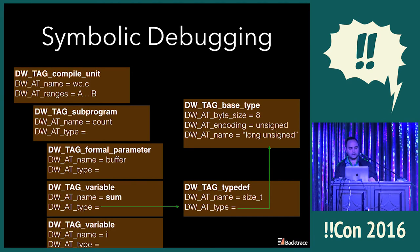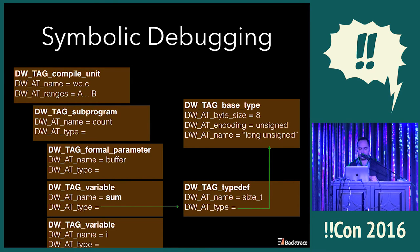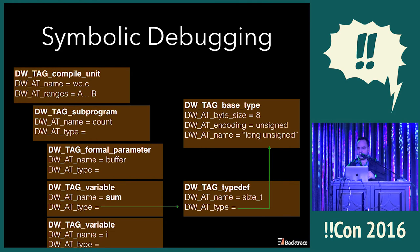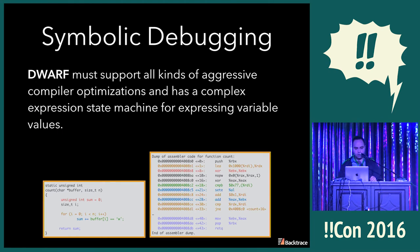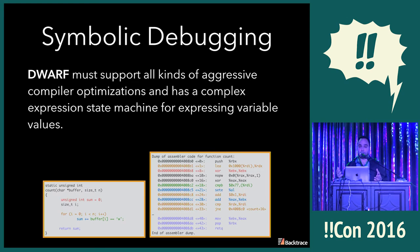For our toy program, a subset of that debug_info would look like this: you have a compilation unit, wc.c, with a whole bunch of information. Within that you have a subprogram or function, count, which has an argument buffer and a variable sum. The type of the sum variable is a size_t typedef, which is implemented with the base type of an eight-byte unsigned long. The challenge with DWARF is it was implemented to support all kinds of aggressive compiler optimizations, and it's actually Turing-complete.